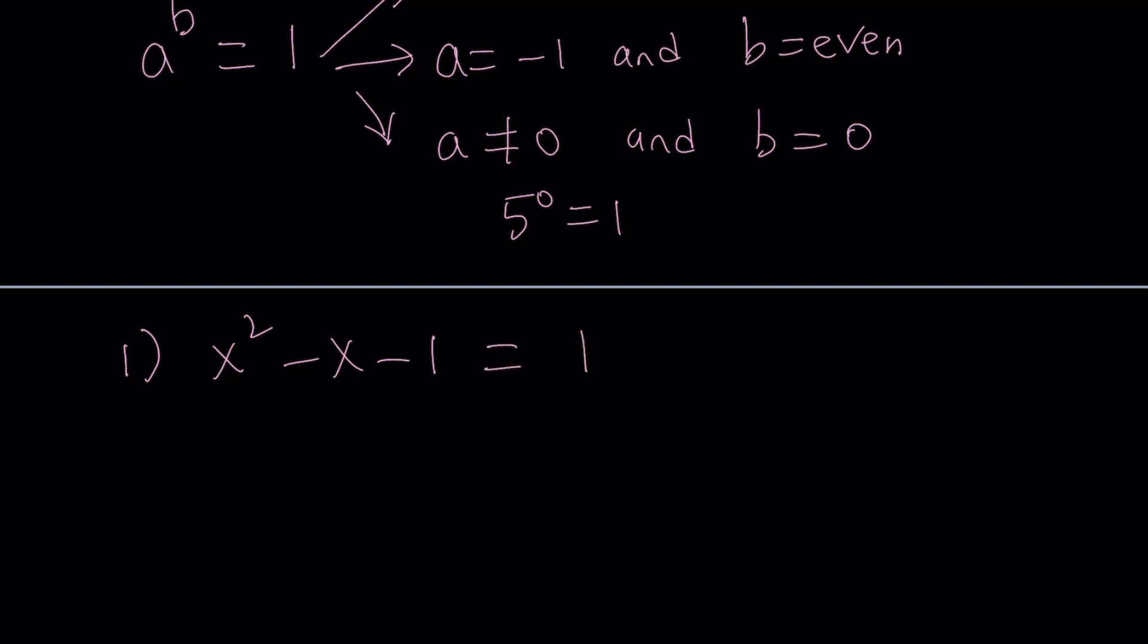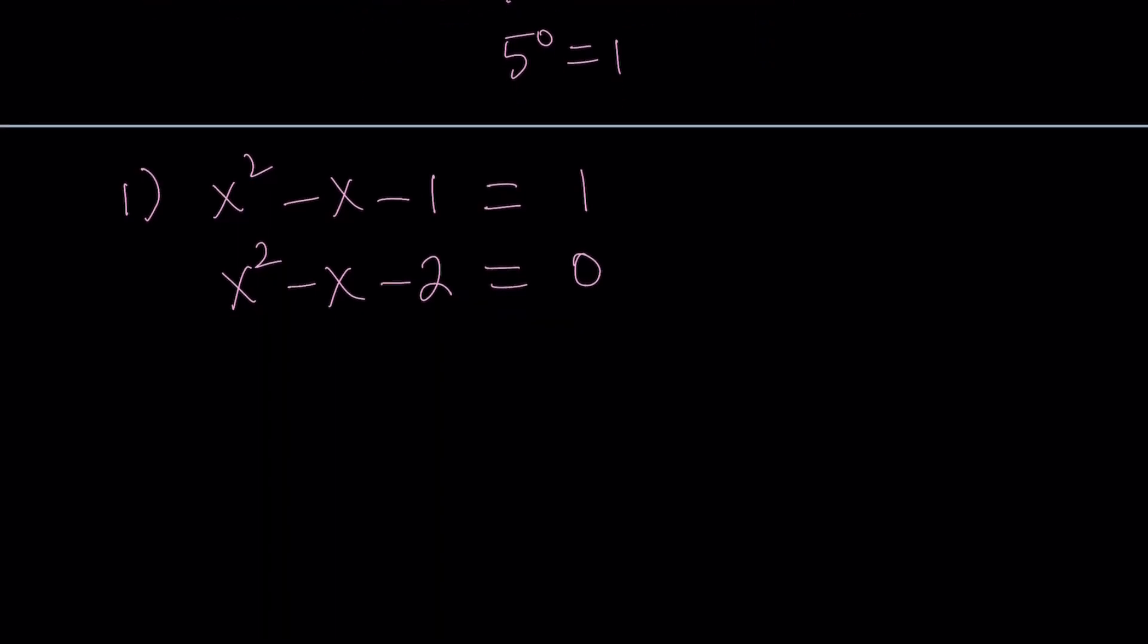If you subtract 1 from both sides, you get x squared minus x minus 2 equals 0. And that is a quadratic equation. So we can solve it. And this is a factorable quadratic equation. So we can go ahead and write it as x minus 2 times x plus 1 equals 0. You're looking for two numbers whose product is negative 2 and whose sum is negative 1. Those numbers are negative 2 and 1, and they make up the factors.